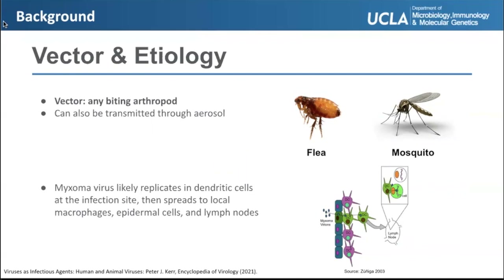Myxoma virus replicates in dendritic cells at the infection site, then spreads to local macrophages, epidermal cells, and lymph nodes.